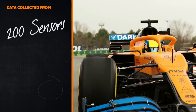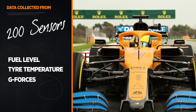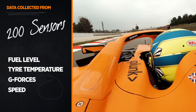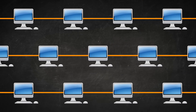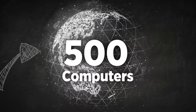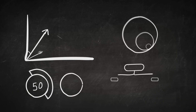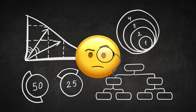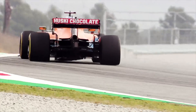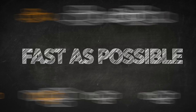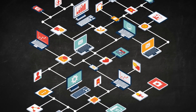Hi, my name is Radia Perlman and today I'll be your substitute teacher. Formula One is an incredibly technical sport — McLaren can't even turn the car on without a computer. Data is collected from over 200 sensors on the car, measuring things like fuel level, tire temperatures, and G-forces. This data is sent back to a network of over 500 computers spread across the world, where engineers and data scientists process it to make quick decisions on car strategy. The data needs to get through the network as fast as possible.